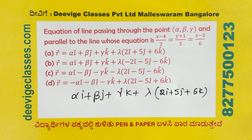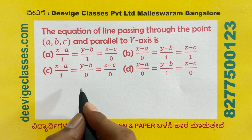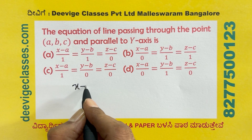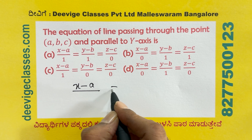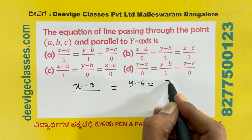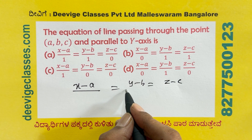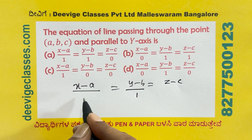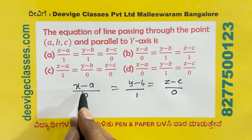The equation of the line passing through the point (a, b, c) and parallel to the y-axis. For parallel to y-axis, the direction ratios are (0, 1, 0). So: x minus a over 0 equals y minus b over 1 equals z minus c over 0. If parallel to x-axis, the direction ratio 1 goes in the x position.